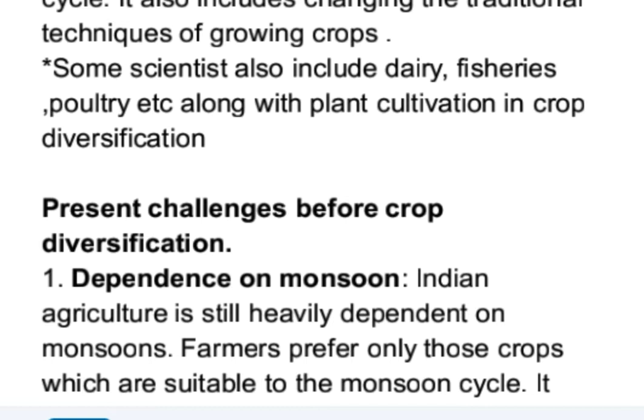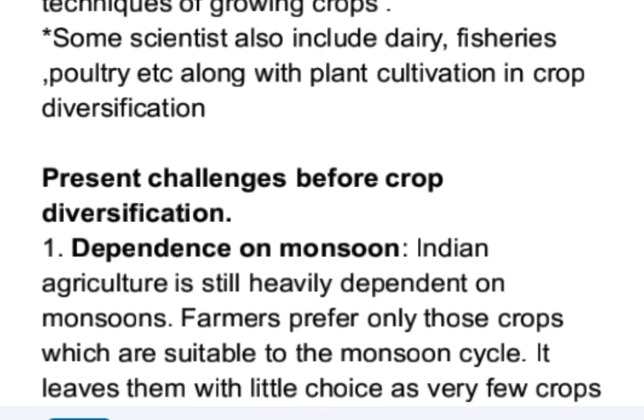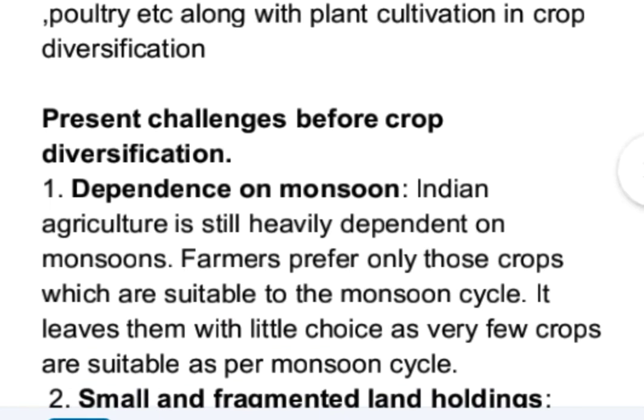Present challenges before crop diversification — what are the main problems in switching to new crops? First is dependence on monsoon. Indian agriculture is still heavily dependent on monsoons. Farmers prefer only those crops which are suitable to the monsoon cycle, leaving them with little choice as very few crops fit within the monsoon cycle.